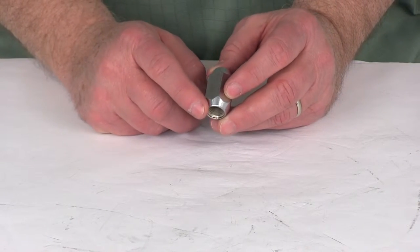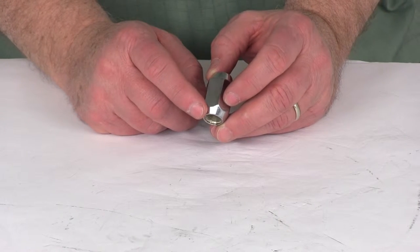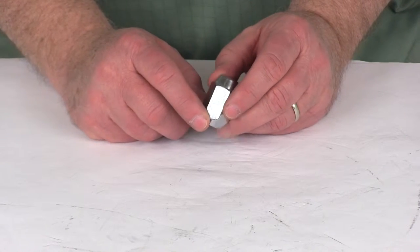If you notice at the bottom of the lug nut, it has the standard 60 degree taper which is made to fit the 60 degree taper on the lug hole of the wheel.